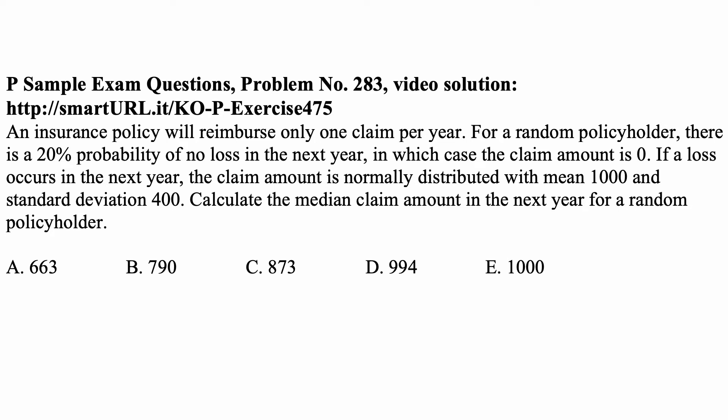Here is a problem for today, for exam P on probability. An insurance policy will reimburse only one claim per year. For a random policyholder, there is a 20% probability of no loss in the next year, in which case the claim amount is zero. If a loss occurs in the next year, the claim amount is normally distributed with mean 1000 and standard deviation 400. Calculate the median claim amount in the next year for a random policyholder.